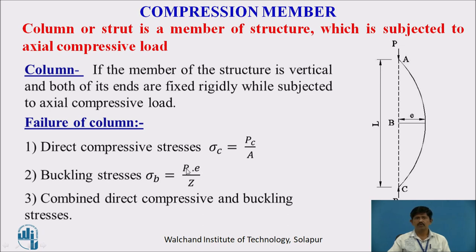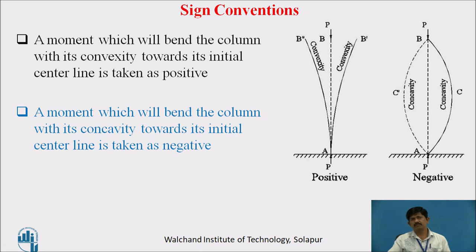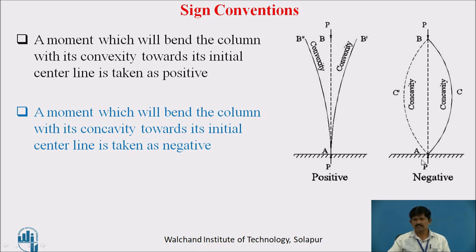The buckling stress sigma_b is equal to load into eccentricity divided by Z·A·N. In between long and short columns, failure may occur by a combined effect of direct compression and buckling stress. Sign convention: a moment which bends the column with its convexity towards the initial position is taken as positive, whereas a moment which bends the column with its concavity towards the initial center line is taken as negative.